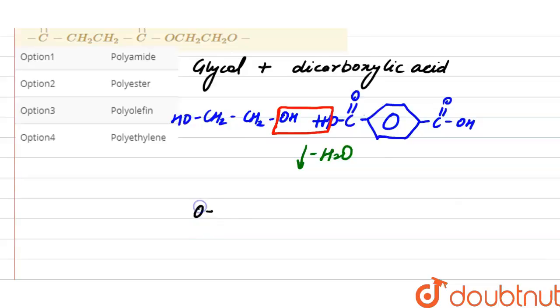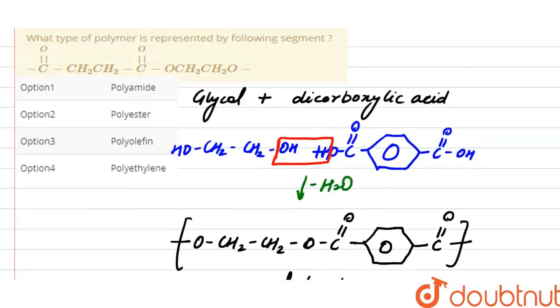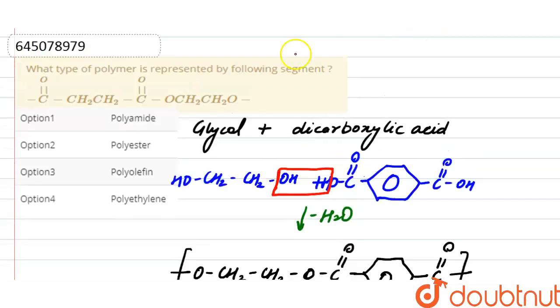As this is the structure of polyester, polyester is formed by the monomer units glycol and dicarboxylic acid. So this is the polymer which is known as polyester. So the given polymer here is polyester and the correct option is option 2.